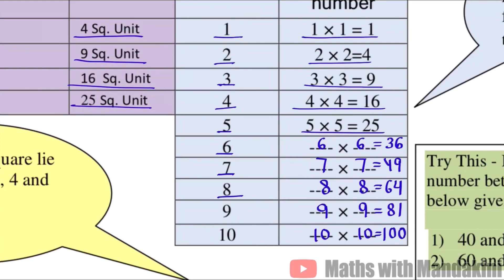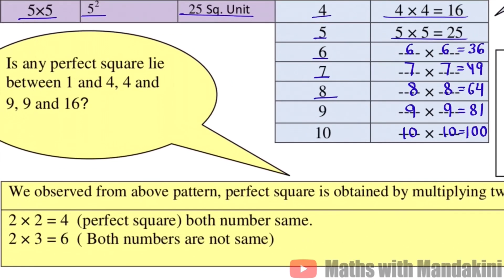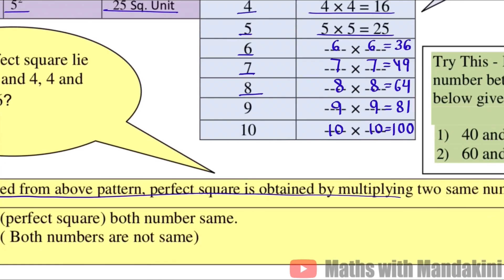So we observed from the above pattern, perfect square is obtained by multiplying two same numbers. When do we get perfect square? When we take two same numbers and multiply by the same numbers. Simply, we have to remember this: when we multiply the number by the same number, then we get a perfect square number. Clear?